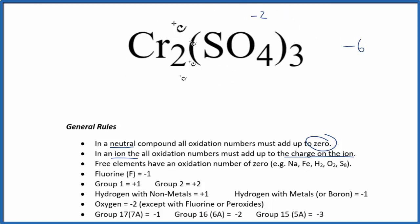That means this is going to have to be plus six, because we said it's going to all add up to zero. So two times something will give us plus six. Two times plus three, that's plus six. So the oxidation number on each of the Cr's here, each of these chromium atoms, that's plus three.